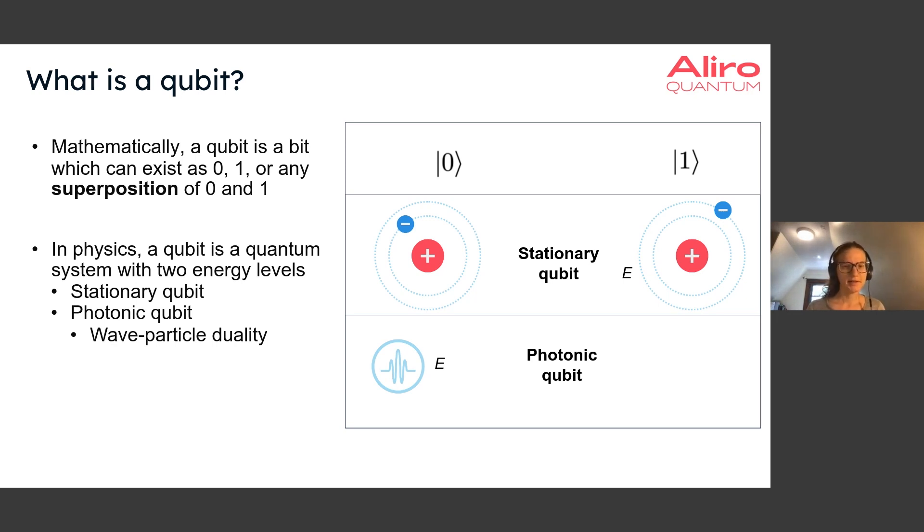A qubit mathematically is just a bit which can exist as 0, 1, or any superposition of 0 and 1. Qubits are often written in ket notation, which involves putting a number representing the state within a line and a bracket. Here we have the 0 ket and the 1 ket representing different quantum states.